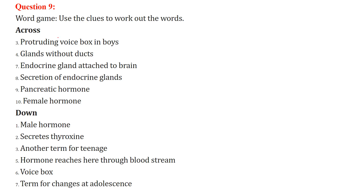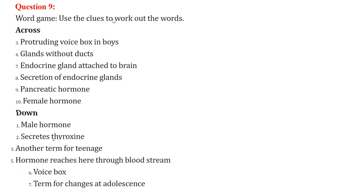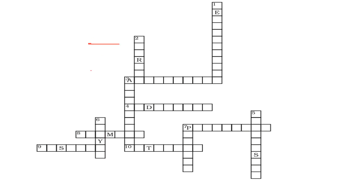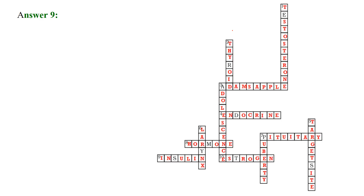Word game answers: Protruding voice box in boys — larynx. Thyroid secretes thyroxine. The answers include: thyroid, testosterone, larynx, puberty, target site, Adam's apple, endocrine, hormone, insulin, estrogen, and pituitary.